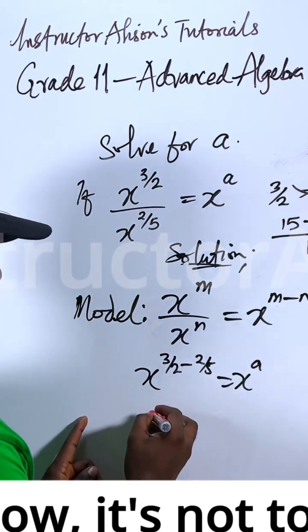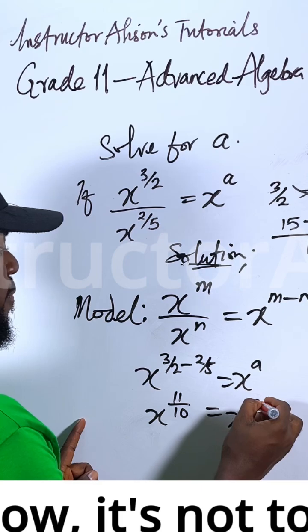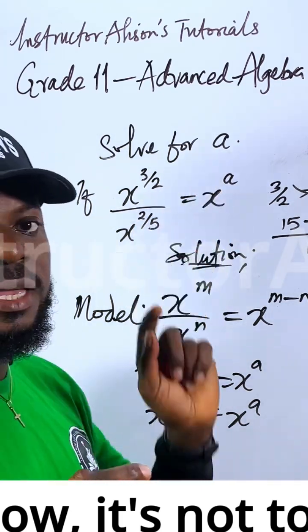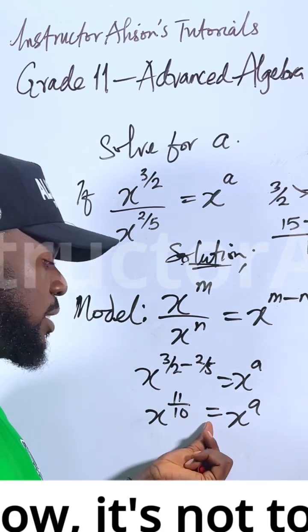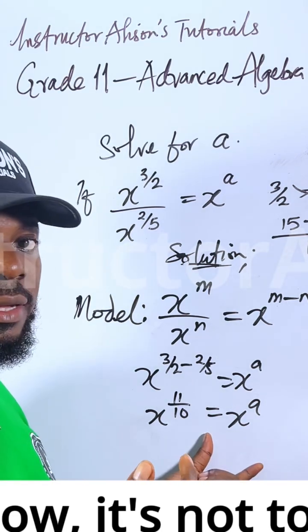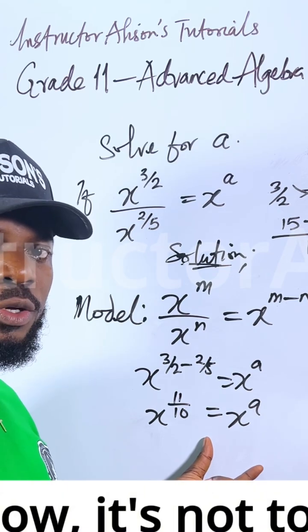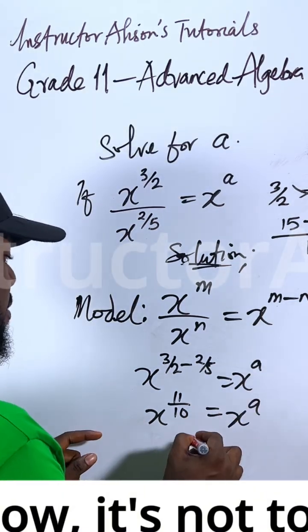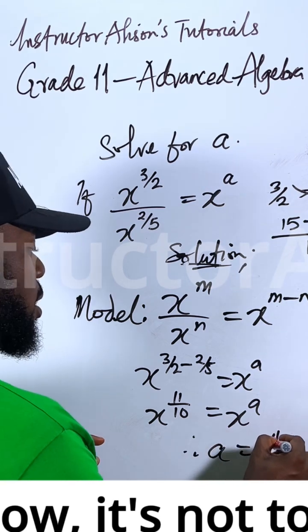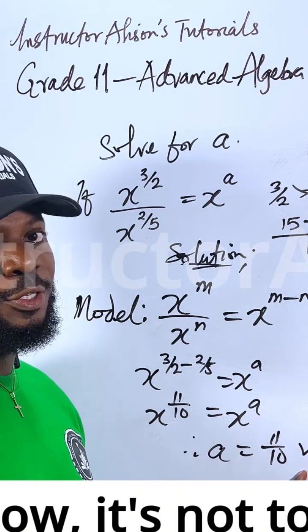So in place of this I'll replace it with 11 over 10 equal to x to the power of a. Because we are solving for a, what you need to do is equate the powers. The law is there in the exponential equation: when the bases are the same, equate the powers. Therefore, a equals 11 over 10. That's the solution to this problem.